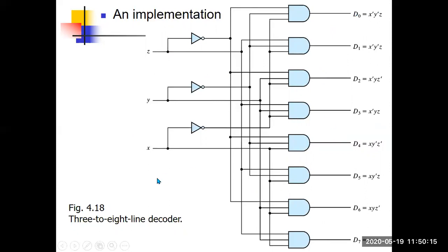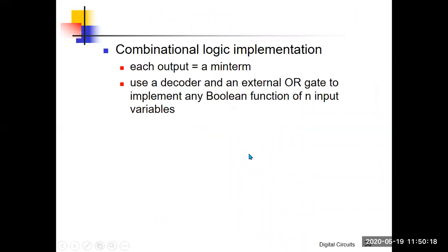We are using AND gates, so the combinations are minterms. We can go back and use a decoder to represent all of the functions we covered in chapter 3. Because we get all the minterms from the decoder, by ORing the minterms corresponding to the value 1 of the function, we get the decoder representation for the function. Any function can be represented by ordering all the value-1 minterms.